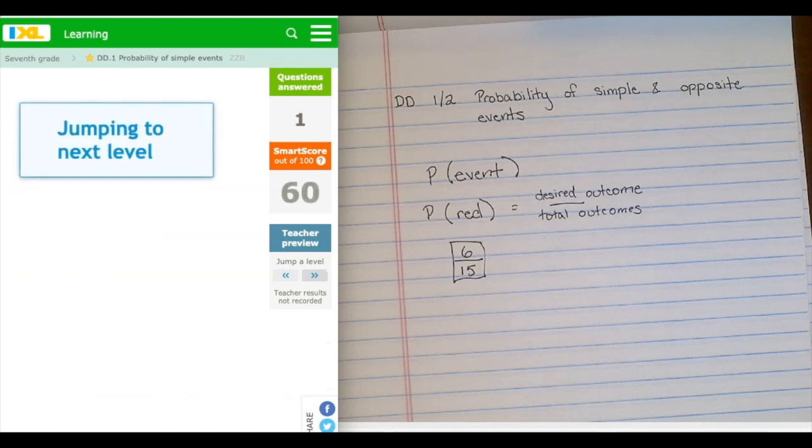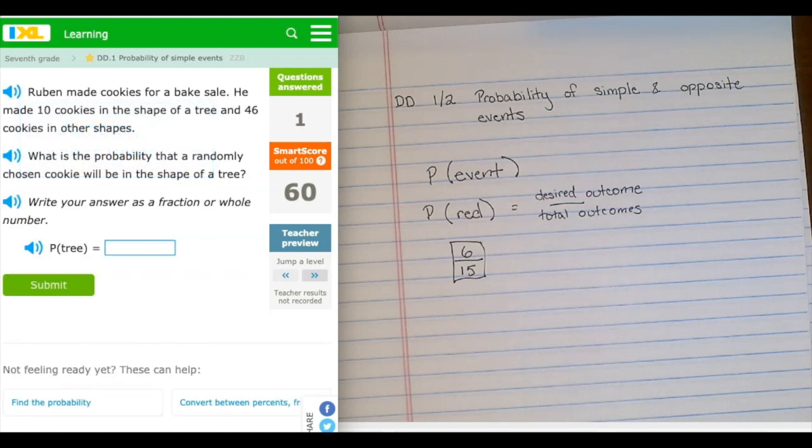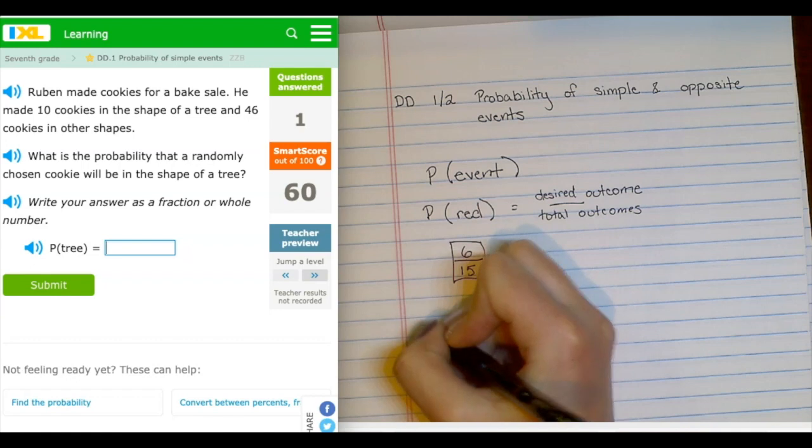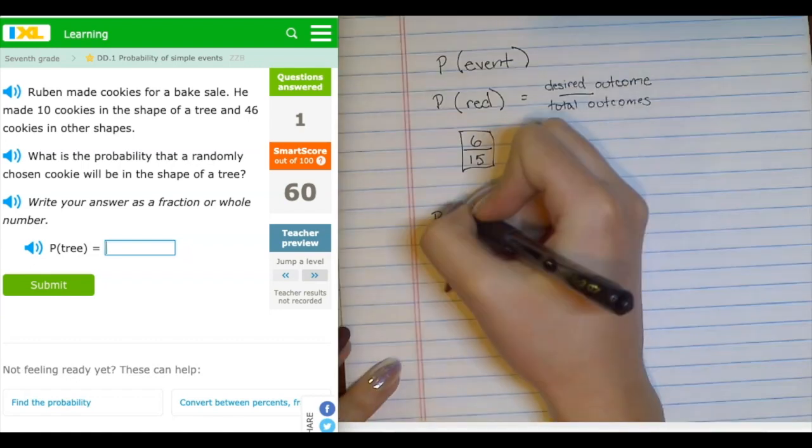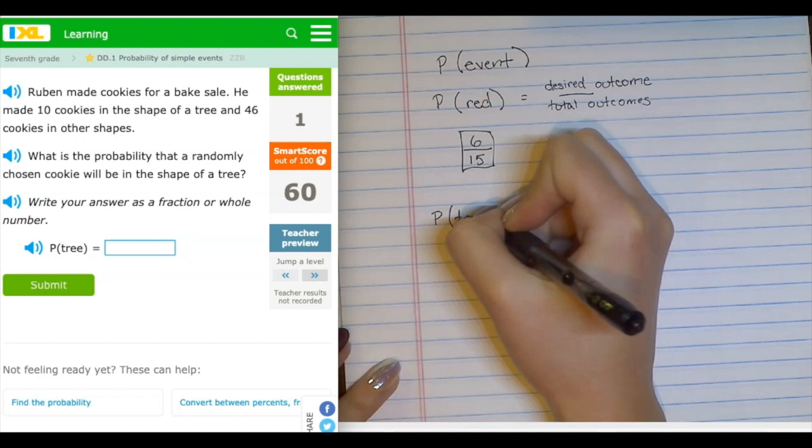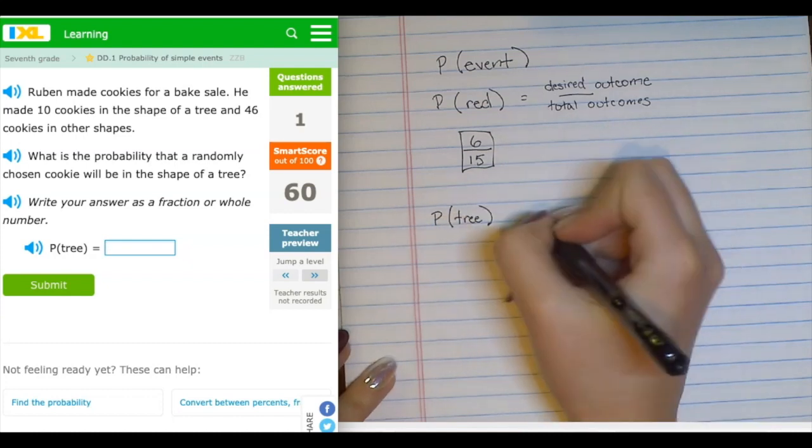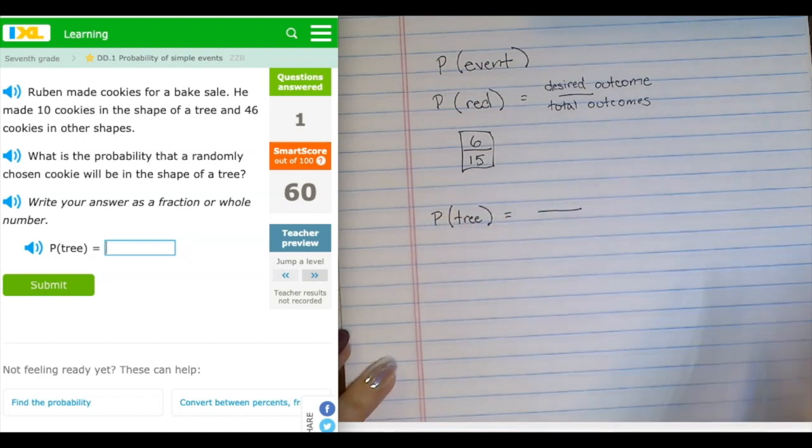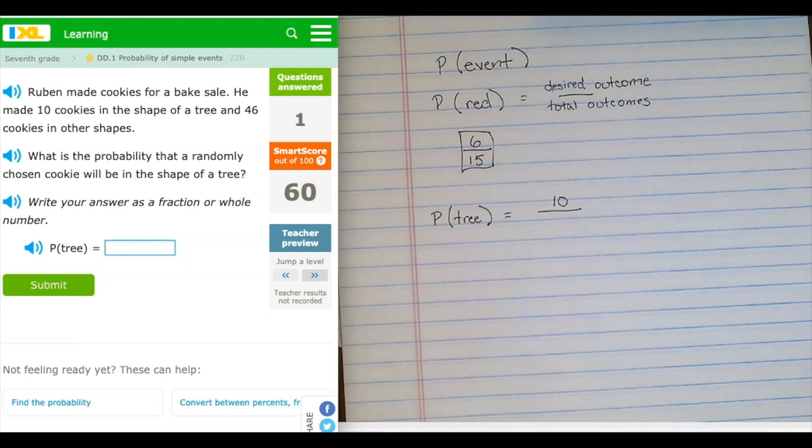We're gonna skip a level just because those all look pretty similar. This question says Ruben made cookies for a bake sale. He made 10 cookies in the shape of a tree and 46 in other shapes. What is the probability that a randomly chosen cookie will be in the shape of a tree? So we have this notation again, probability of tree in parentheses, because that's the desired outcome. So we'll put the desired outcome of trees on top of this fraction. It looks like there are 10 cookies in the shape of a tree, and 46 are in other shapes.